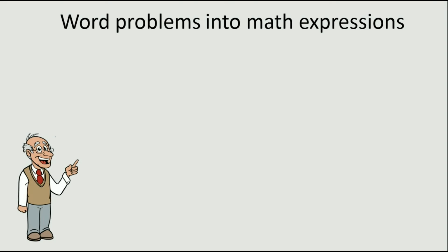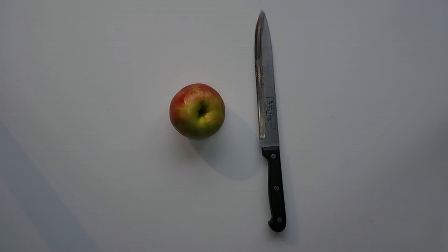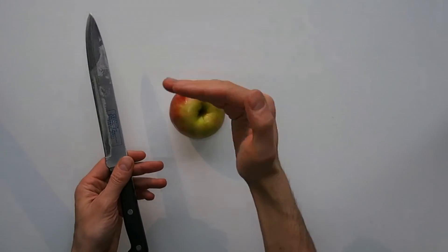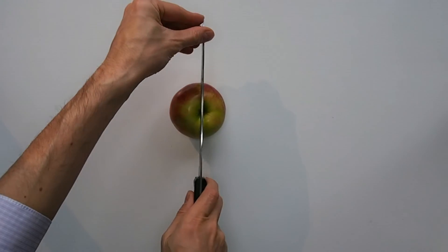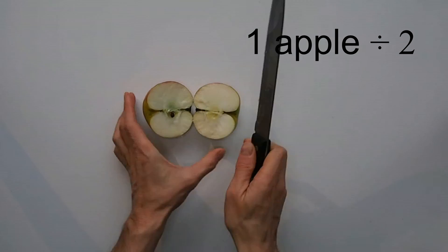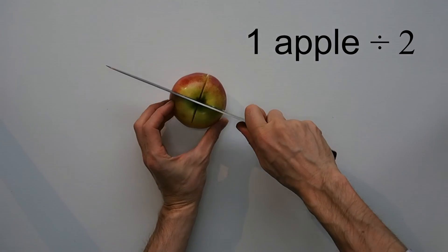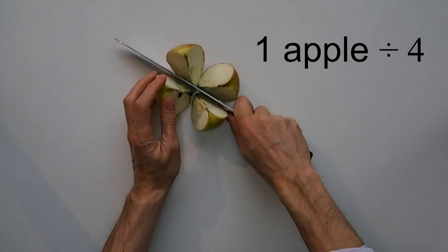Let's see now how division is specified in problems. Division means splitting or cutting something in equal parts. Cut this apple in half, we have two parts. Another time in half, we have four equal parts.